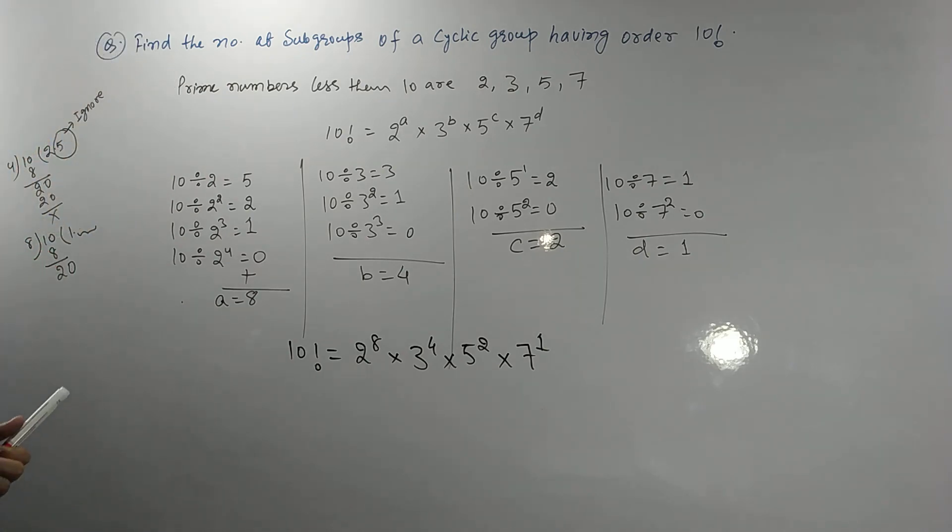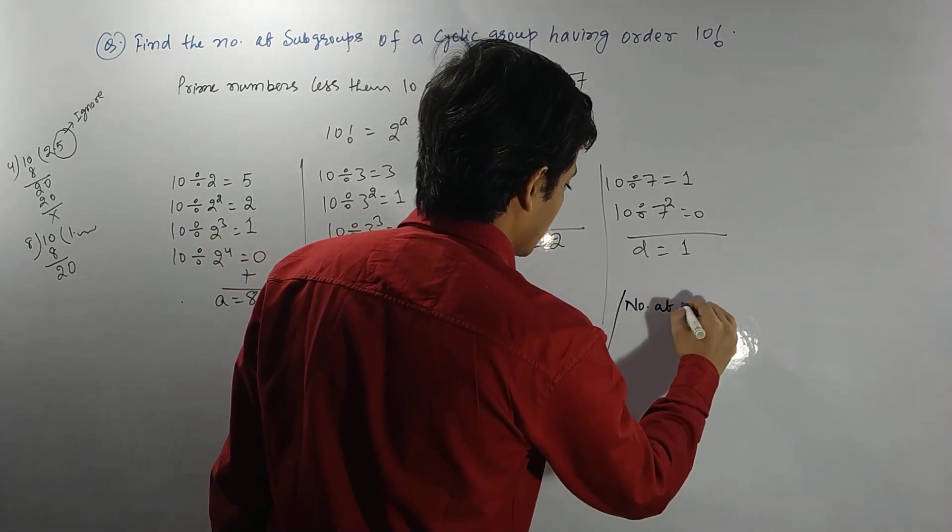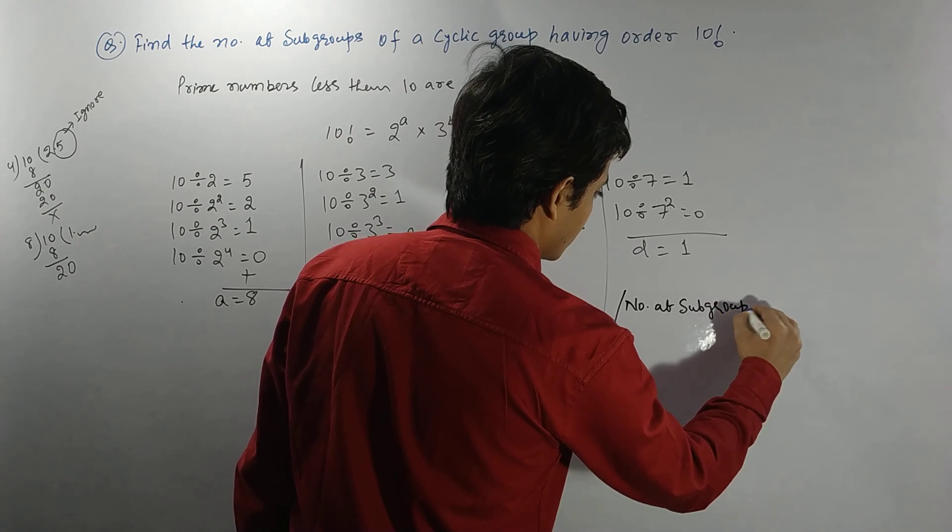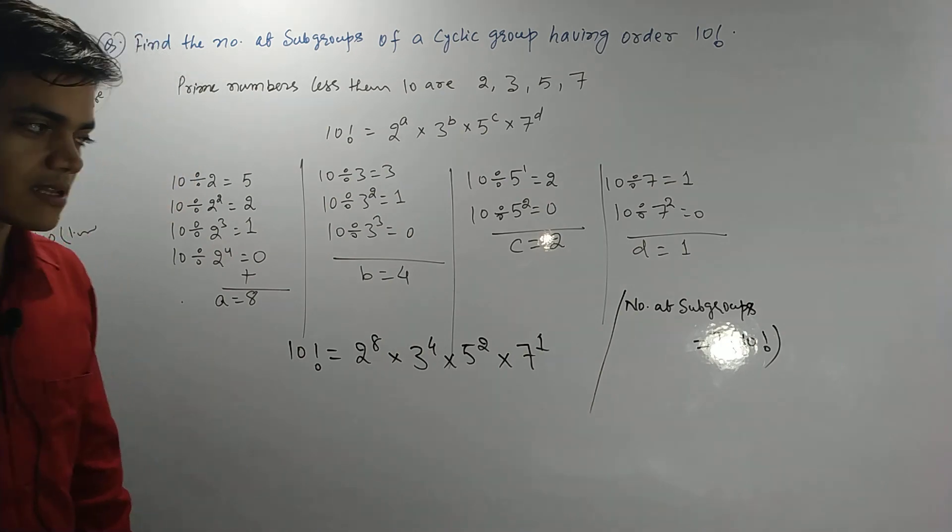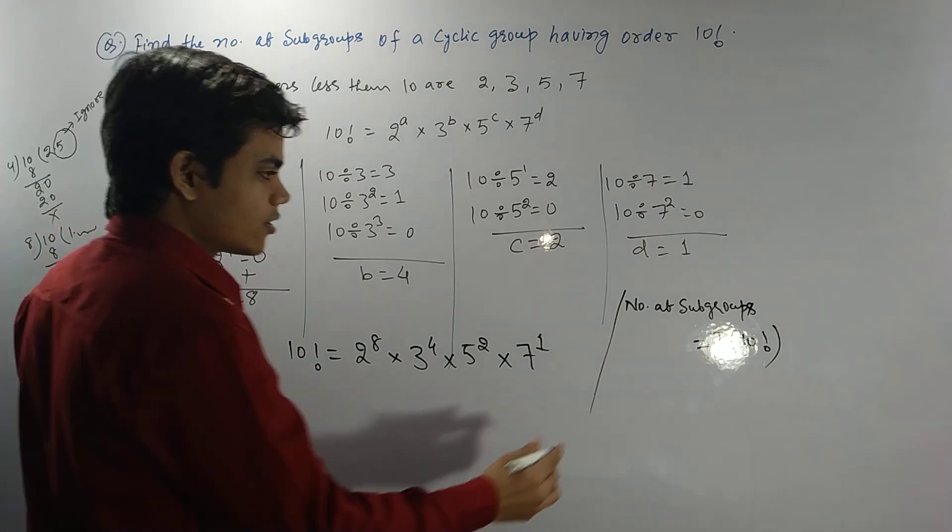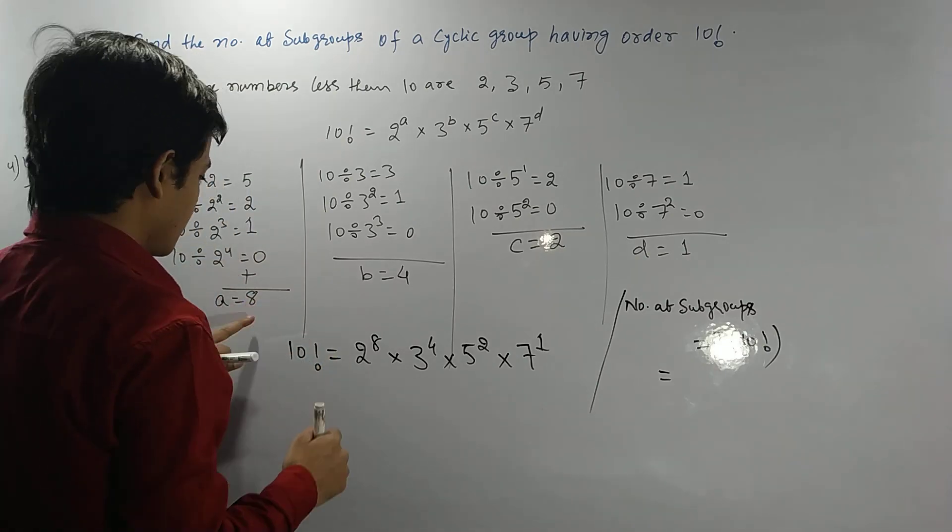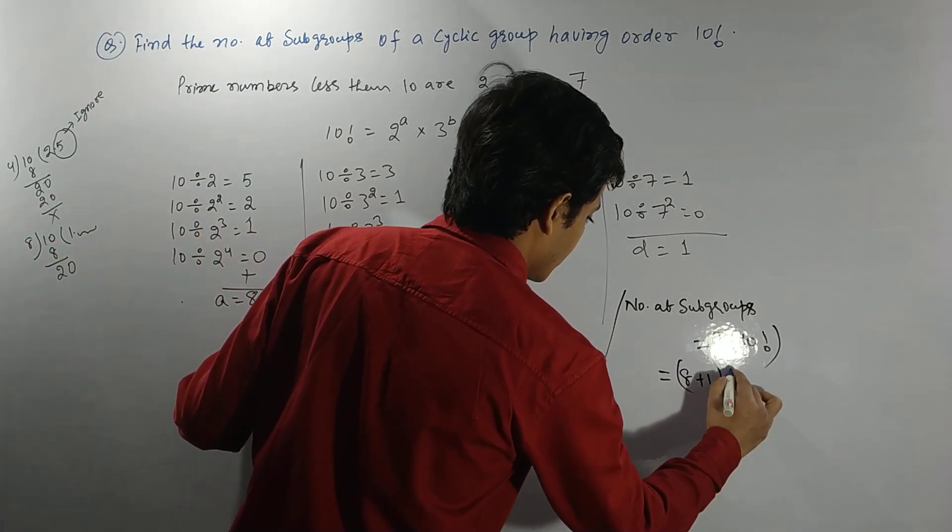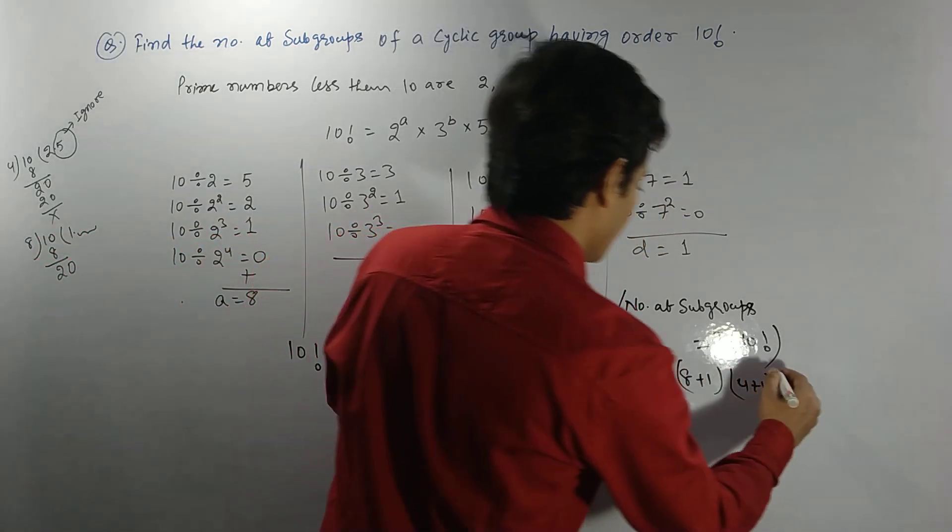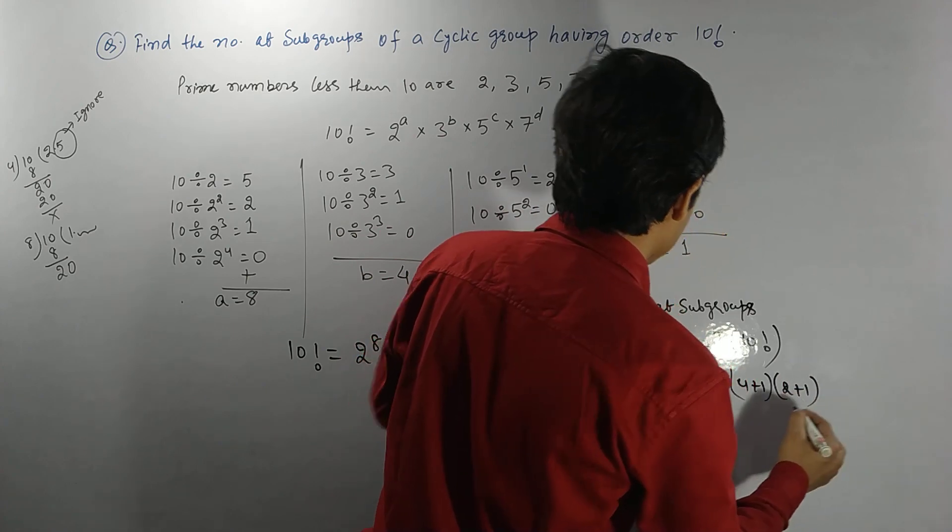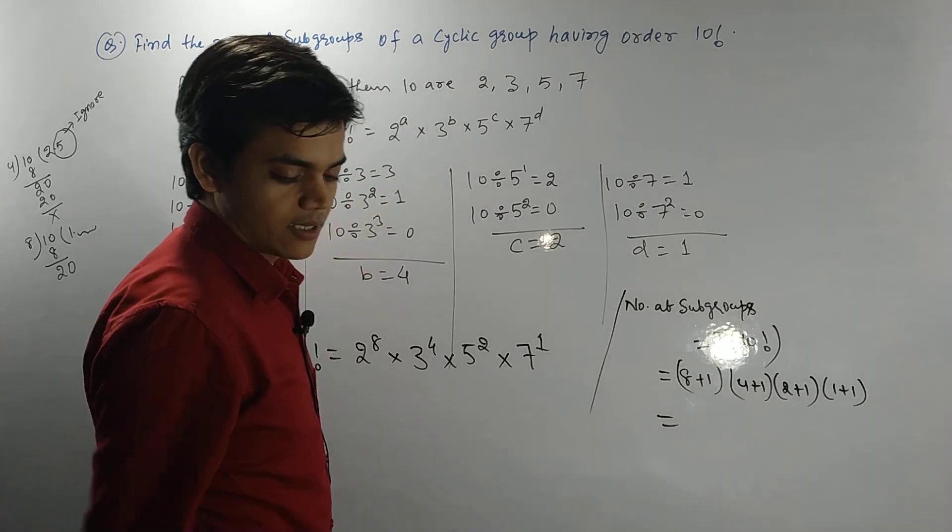Now we have to find the number of subgroups. The number of subgroups is certainly tau of 10 factorial. Please go to my previous lecture. What is this? This is nothing but (a+1) times (b+1) times (c+1) times (d+1), which is (8+1)(4+1)(2+1)(1+1). And certainly after calculating you will get 270.